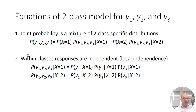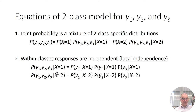The second assumption says responses are independent within latent classes. Statistically, independence means the probability of a pattern — say 1-1-1 — equals the probability of a 1 on the first variable times the probability of a 1 on the second variable times the probability of a 1 on the third variable. Here we say they are independent given class membership. So the probability of a pattern given class membership equal to 1 is the product of the conditional probabilities for each individual indicator given class 1.